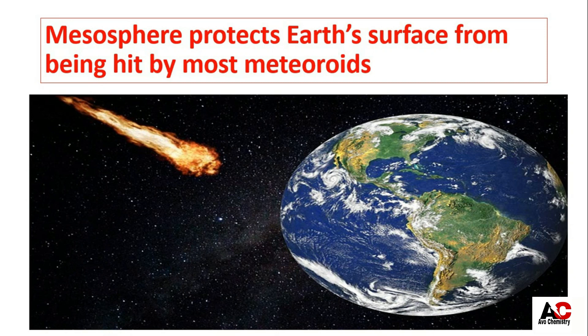A question may arise: why don't these particles burn up in the thermosphere? The answer is that in the thermosphere, the gas concentration is very low, so there isn't enough to collide with the meteoroids. But as they enter the mesosphere, the comparatively higher concentration of gas molecules means chances of collision increase significantly. So protecting us from meteoroids is one of the key advantages of the mesosphere.